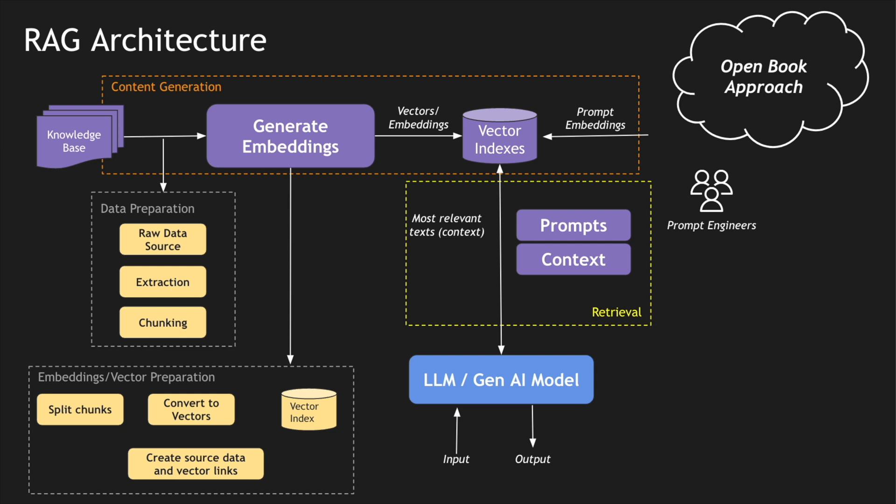This kind of approach is called an open book approach because you can plug in your content generation logic and have different sources. The architecture says that the LLM can use vector indexes with relevant information, and the vector indexes are created by content generation using a specific methodology where we create embeddings or vectors and feed them to the vector indexes.